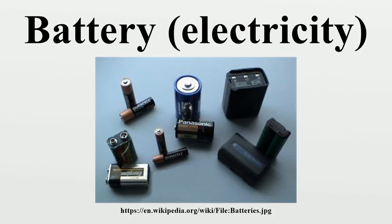Capacity and discharge: A battery's capacity is the amount of electric charge it can deliver at the rated voltage. The more electrode material contained in the cell, the greater its capacity. A small cell has less capacity than a larger cell with the same chemistry, although they develop the same open circuit voltage. Capacity is measured in units such as amp-hours.